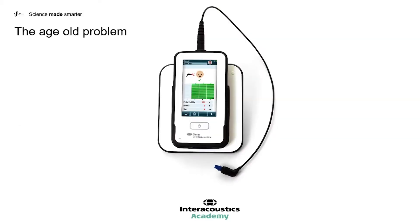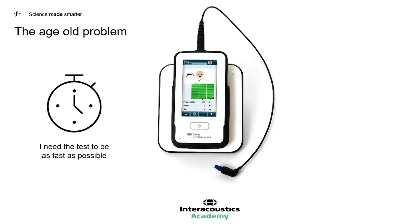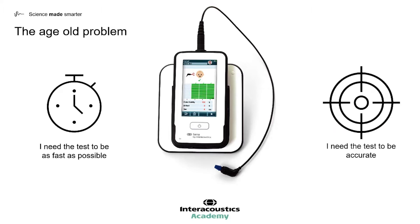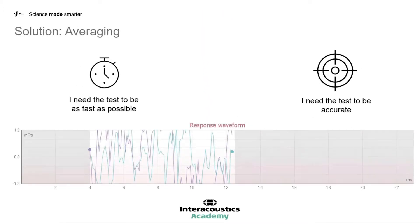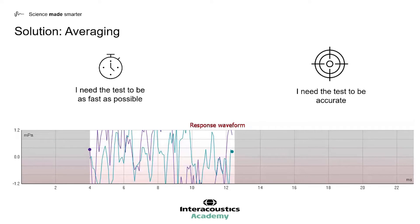As with any screening test, the age-old problem always exists that we want the screening test to be as fast as physically possible, whilst at the same time the results being accurate and robust to try and diagnose the condition which we're trying to identify. With regards to the OAE acoustic emission, the challenge we face is that the OAE is so small in comparison to the noise recorded at the microphone in the ear canal. The way to separate the OAE from noise is of course to use signal averaging.